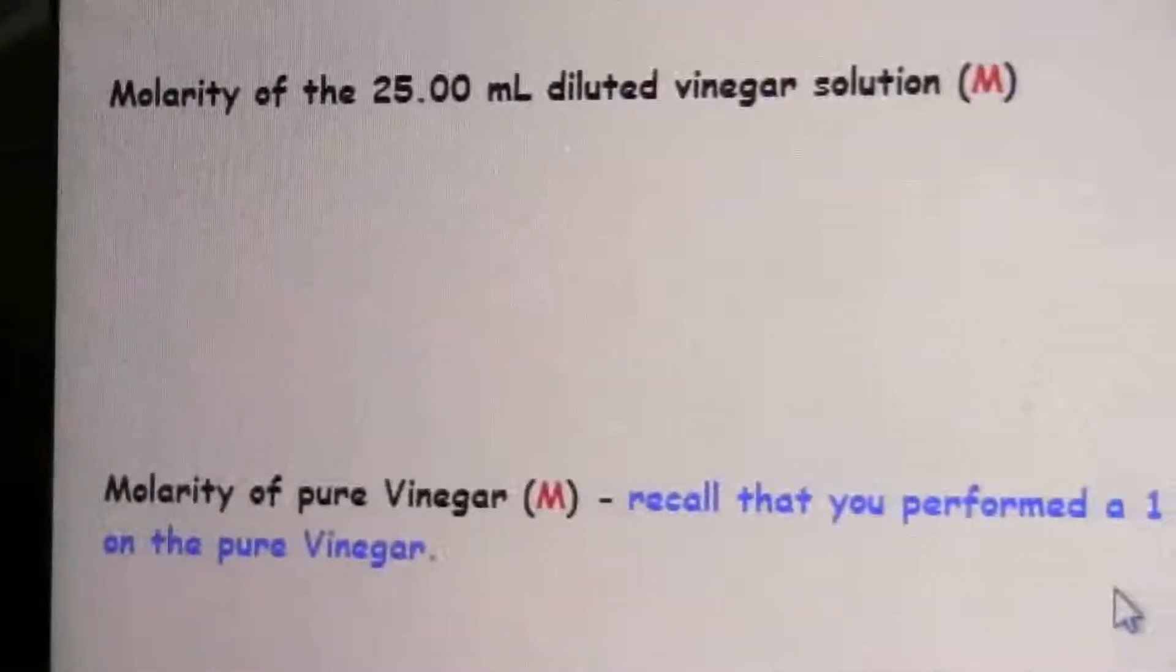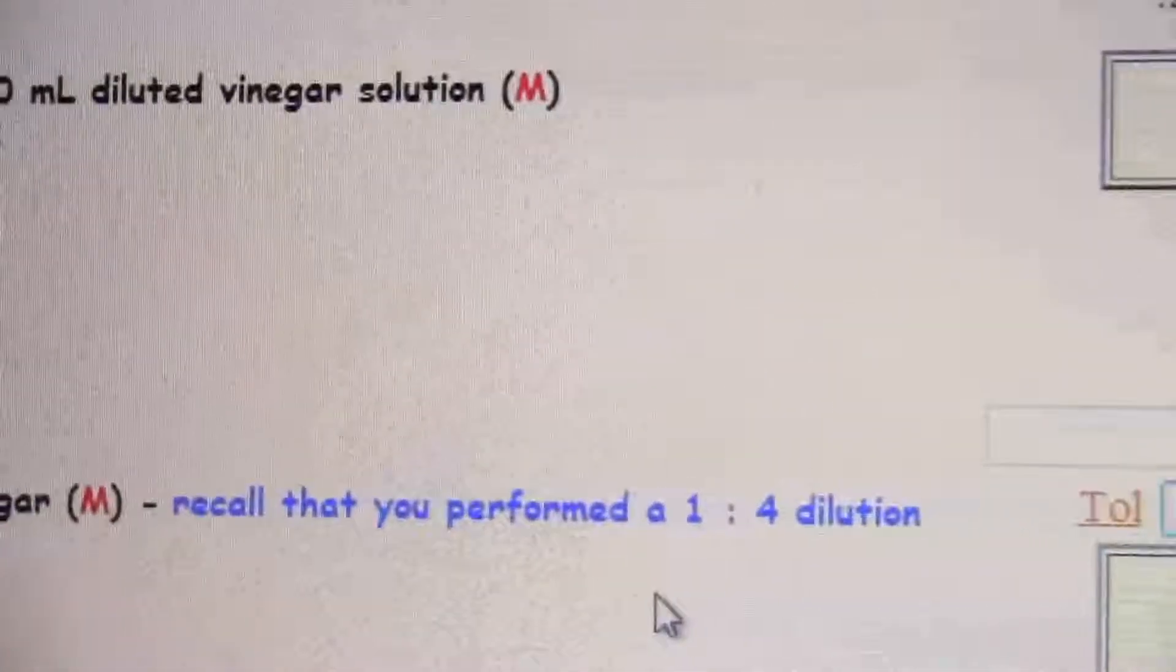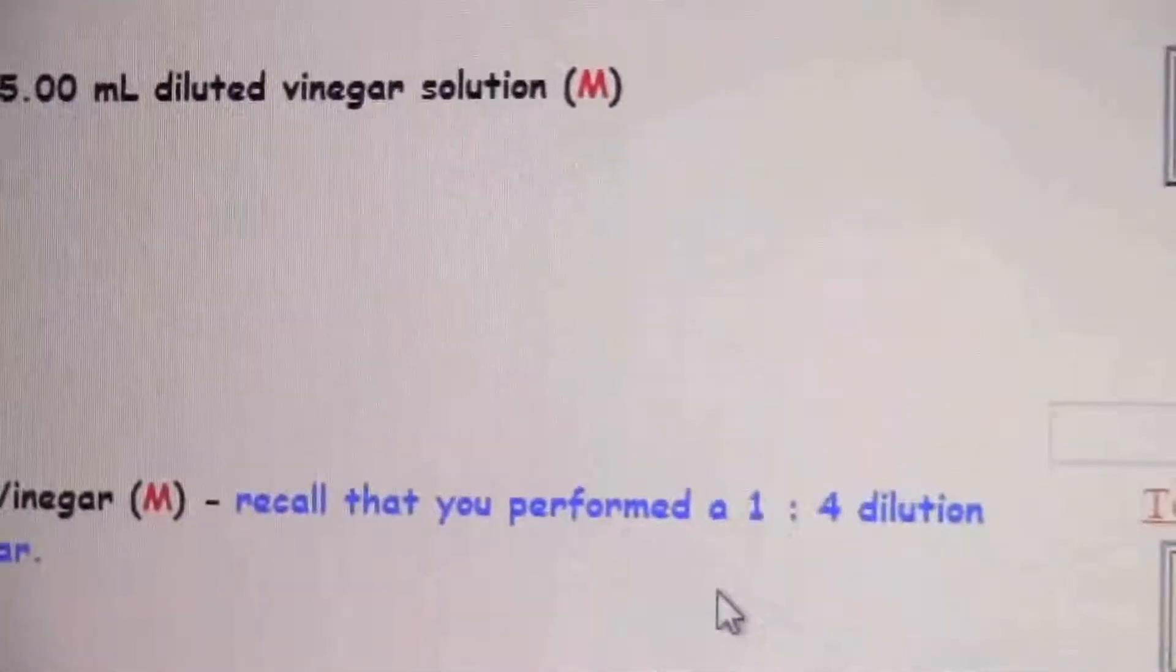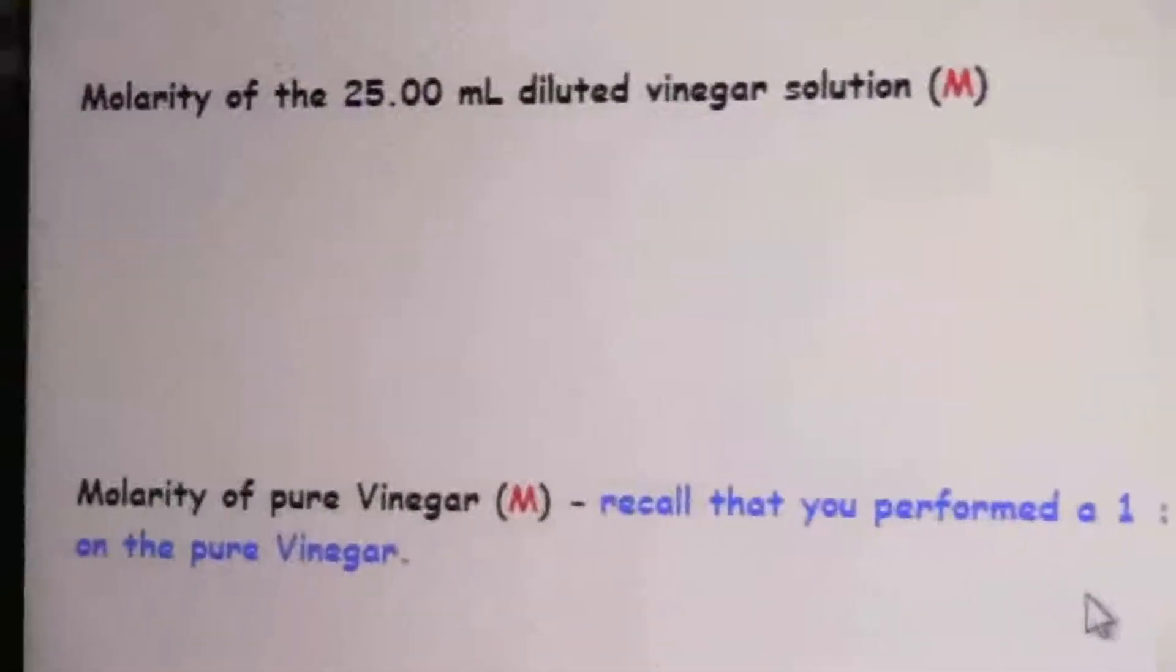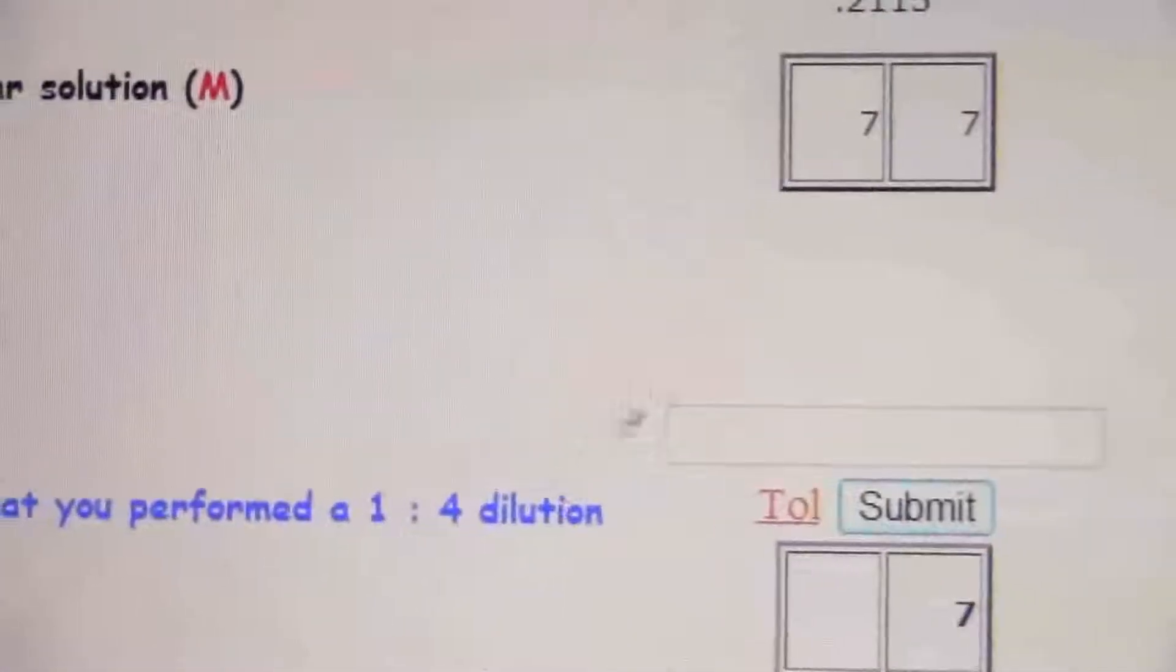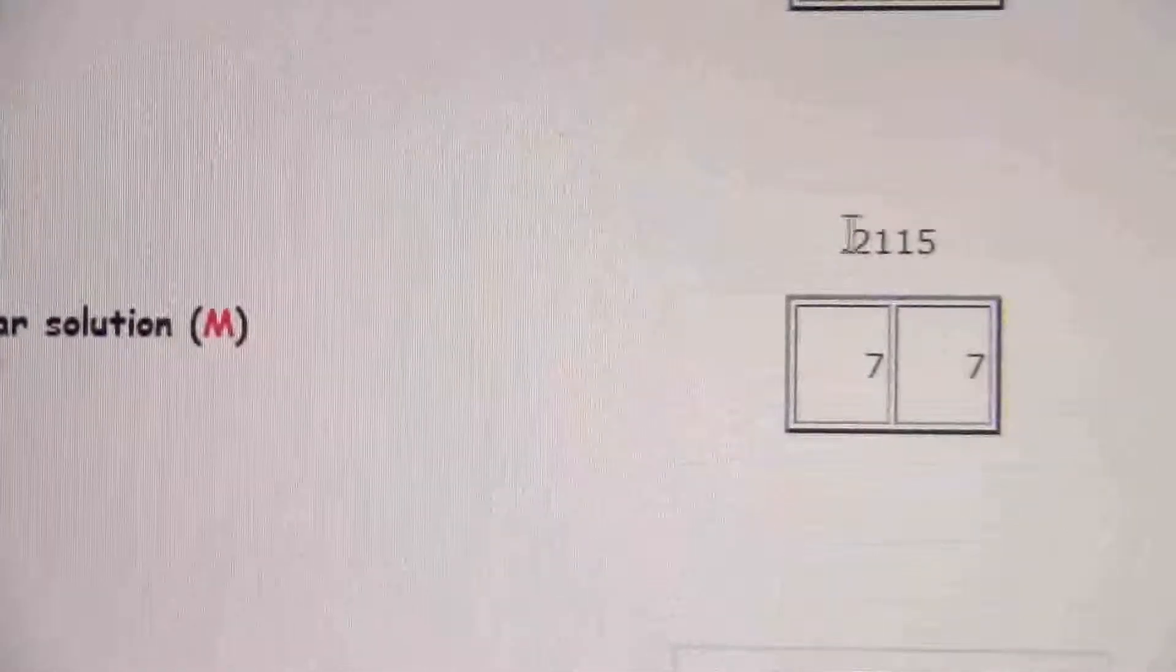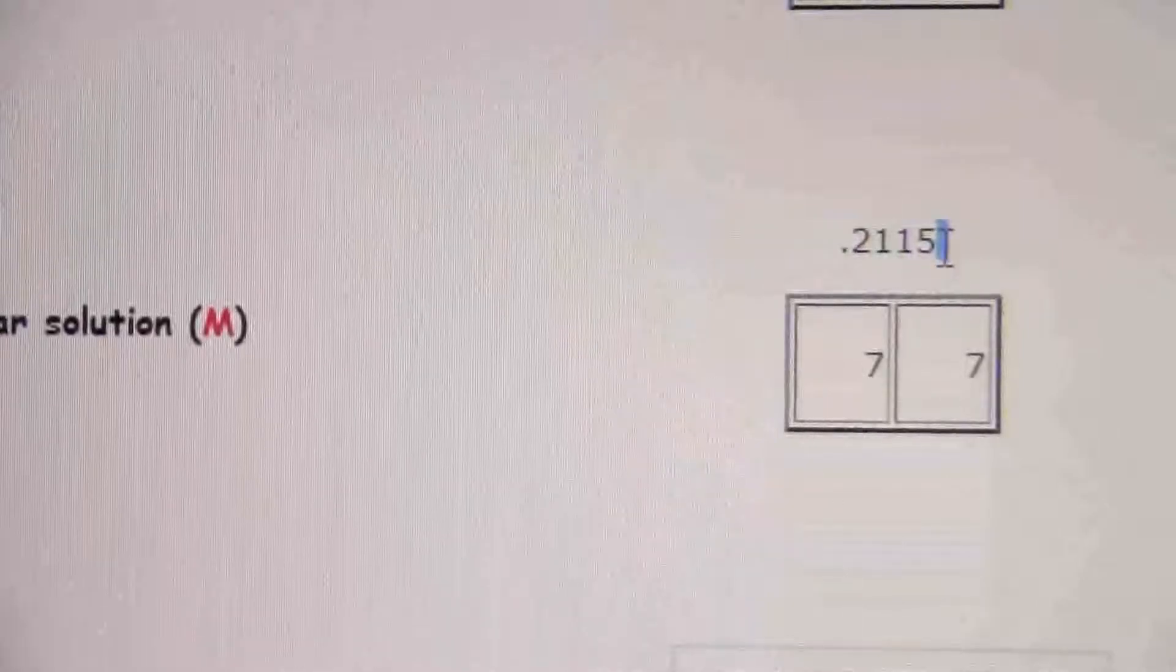So now it wants the molarity of the pure vinegar, and it even tells you, recall that you performed a 1 to 4. That was when you took the 25 milliliters and you diluted it up to 100 in the volumetric flask. So that means the pure vinegar is four times more concentrated than the dilute vinegar.